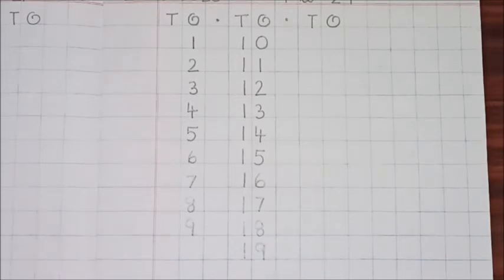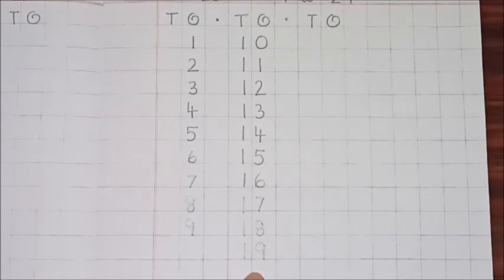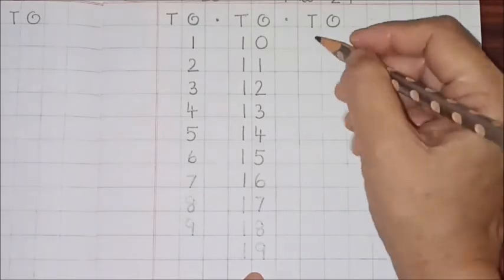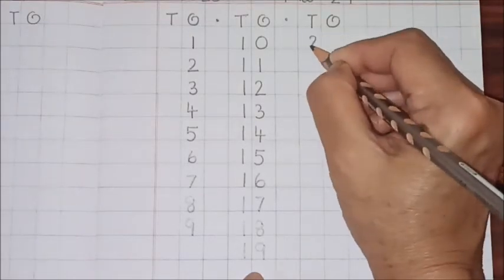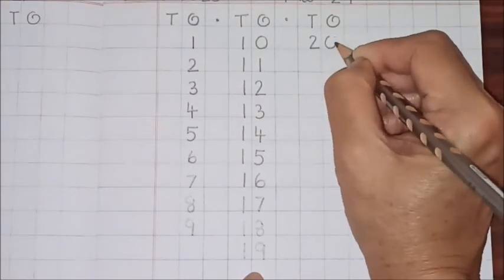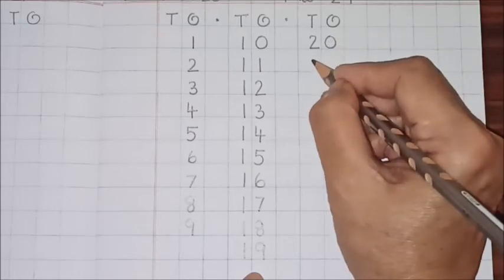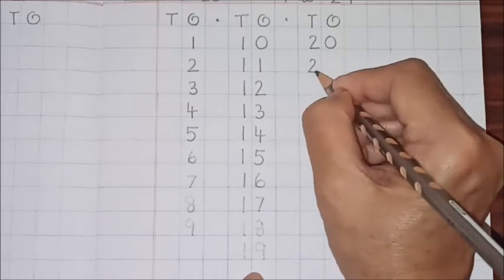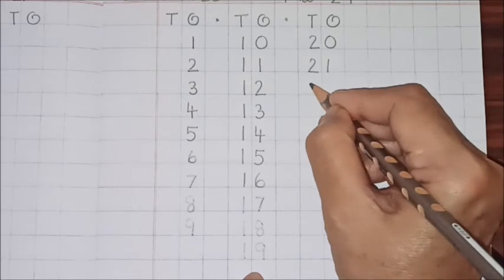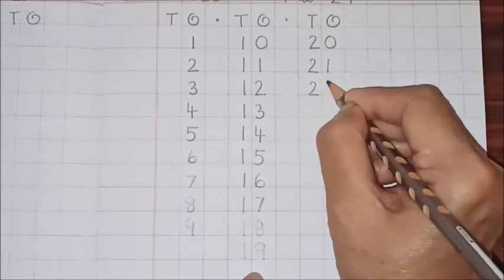What will come after 19 children? 10, 11, 12, 13, 14, 15, 16, 17, 18, 19... 20! Will you write 20 down here? Will you write 20 down here? Will you write 20 down here? No, no, no, no, no, no.